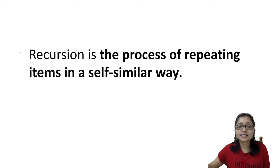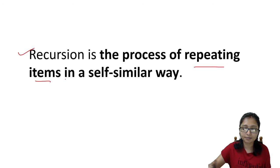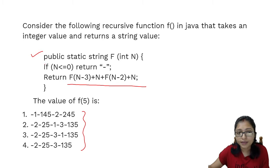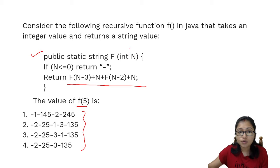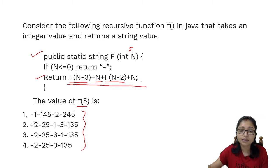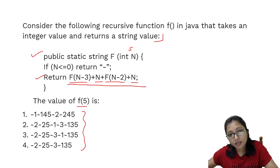What is recursion? Recursion is a process of repeating an item in a similar way. The problem here is how it will repeat the item. Whenever we call this function with 5, every time it is doing: return f(n-3) + n + f(n-2) + n. So first time we are calling with n=5.